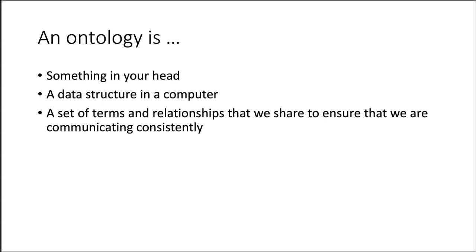An ontology may exist only as a conceptual scheme in our heads. We all categorize and classify the things in our world, but we seldom are explicit about writing down our classification systems. When we do write down our ontologies, they become available both to people and to computers. If we want to know what kind of amino acid alanine is, or write a book about alanine, or state that we performed an experiment to measure the concentration of alanine, then an ontology can give us a set of standardized terms and relationships that can facilitate all of these things. Our ontology can tell us that aromatic amino acids are not aliphatic, and that amino acids have other properties, such as a standard genetic code.